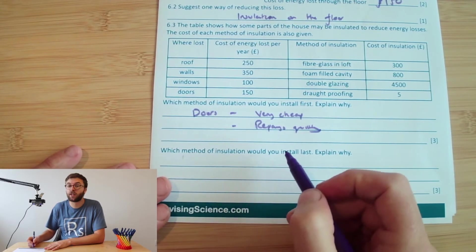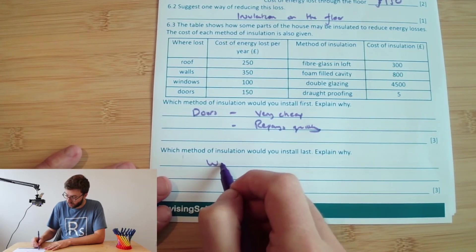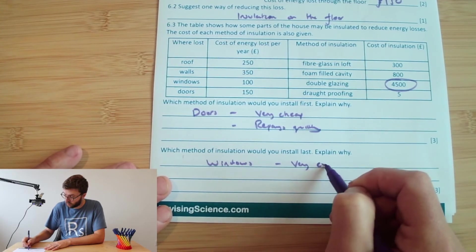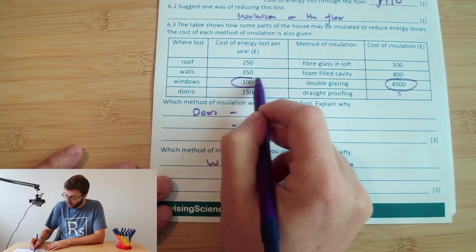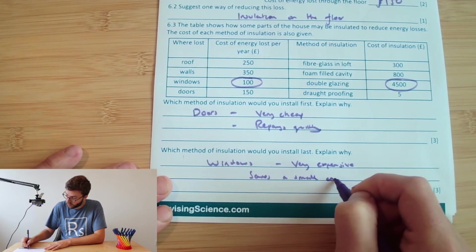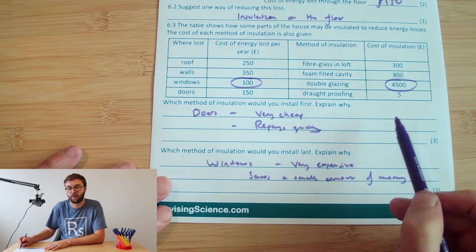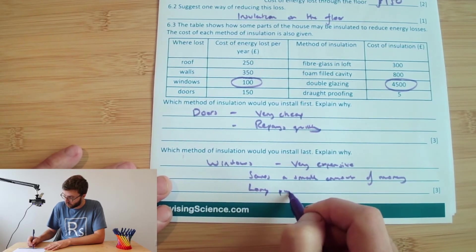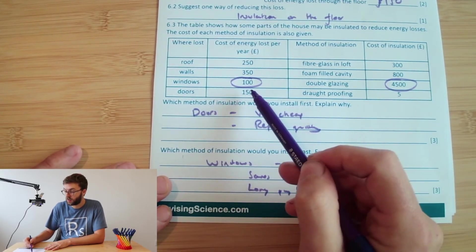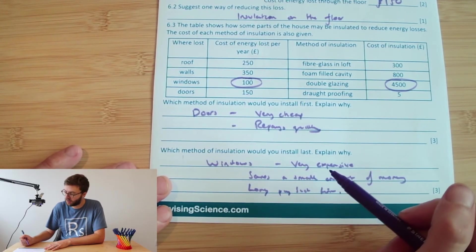Which method of insulation would I install last and explain why? So again, the one that jumps out to me is Windows. And there's two reasons. It's very expensive. And it only saves you 100 pounds per year, which is a small amount of money compared to the rest. You can see it have a really long payback time. You think about how many times, how many years you have to go through from 100 pounds to get 45 hundred pounds, maybe 45 years to pay it back.